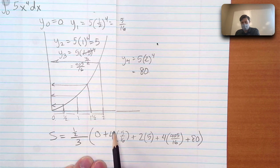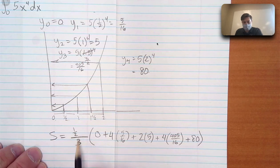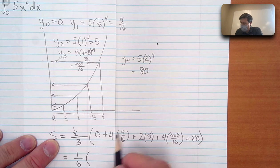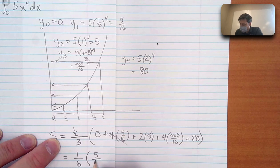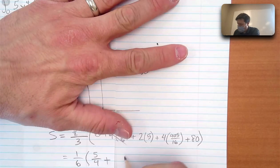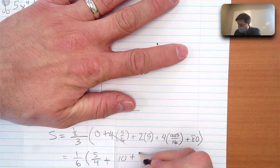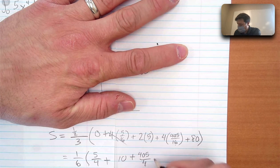So that means I can really just kind of rewrite this as 1 sixth, 1 sixth times 5 over 4, plus 10, plus 405 over 4, plus 80.